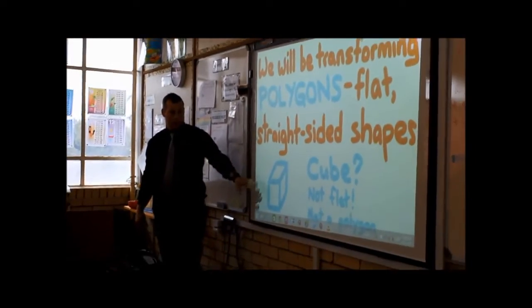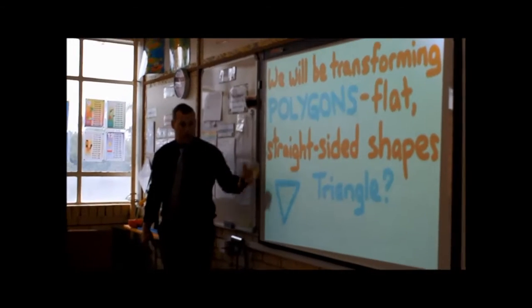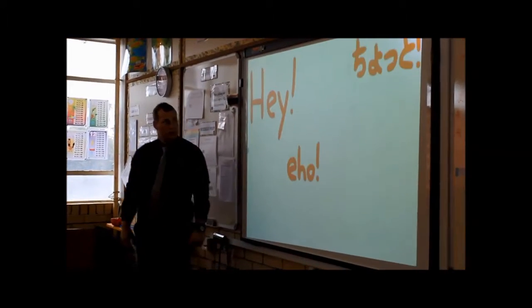Right, like I said, a circle is not straight, a cube is not flat, so it is not a polygon. But a hexagon and a triangle are.